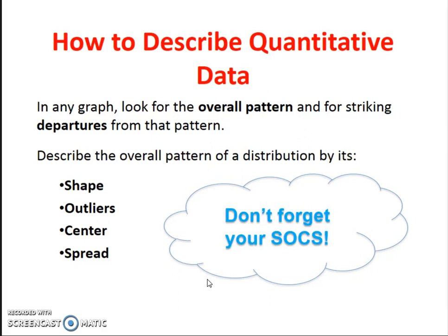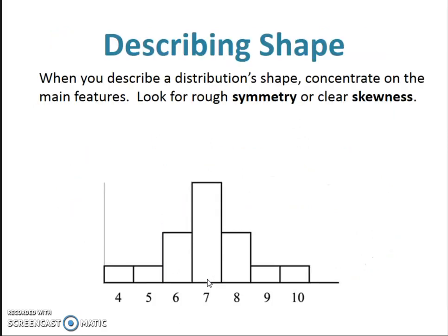We will go into more detail on those three in the next couple days. So talking about shape — when you describe a distribution's shape, concentrate on the main features. Look for any rough symmetry. I use the word rough because nothing in life, especially statistics, is ever exactly symmetrical. So roughly symmetric is good enough for us. Or look for any clear skewness if it goes one way or another. Looking at this graph here, this is roughly symmetric.